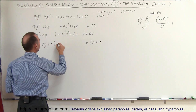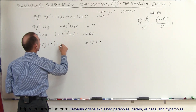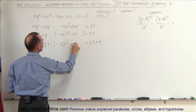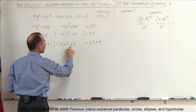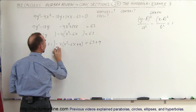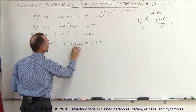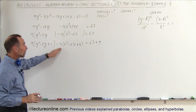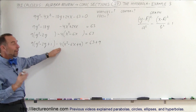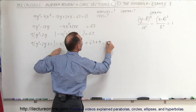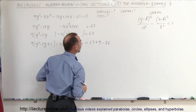We do the same for x: we have minus 4 times (x squared minus 6x). We take half of negative 6, which is negative 3, squared to get plus 9. But negative 4 times 9 is negative 36, which means we subtracted 36 from the left side, so we must subtract 36 from the right side.